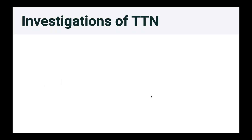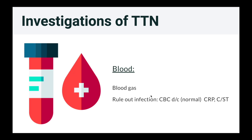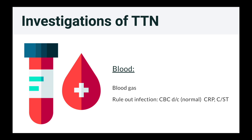How should we investigate? Firstly, we take blood. For lung pathology, we take blood gas to look at the pH, PCO2, and assess for respiratory acidosis. Since one of the most important differential diagnoses in neonates with breathing difficulty is infection — congenital pneumonia — we need to rule out infection. We take a complete blood count, which is usually normal in TTN but white cells may rise with infection. We also take inflammation markers like C-reactive protein and blood culture to rule out infection.